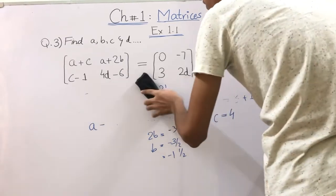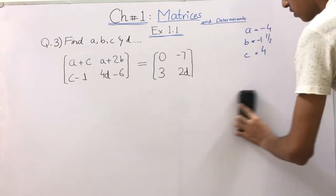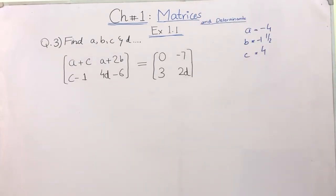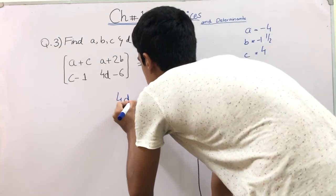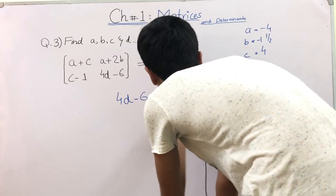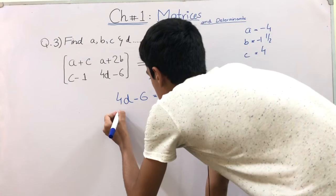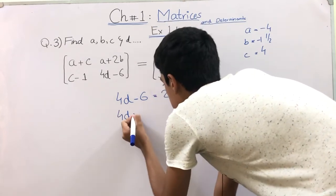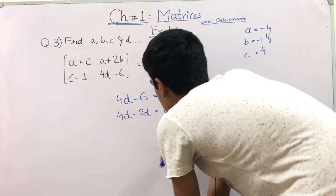Now the last equation is our fourth equation. We will solve this now. The fourth equation is that 4D minus 6 is equal to 24. And now what do we do? 4D minus 6 is equal to 24.